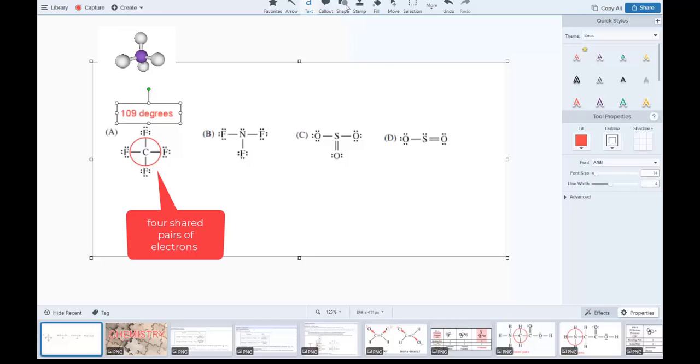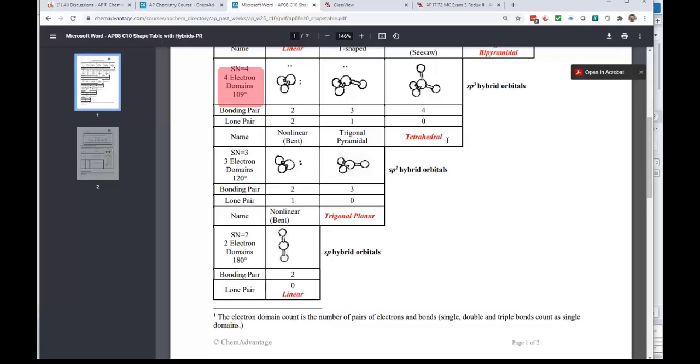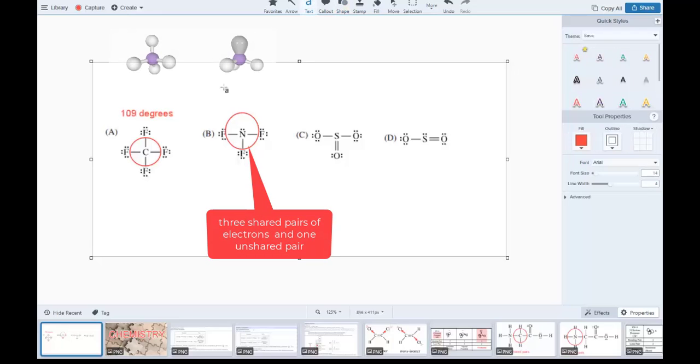Let's go back to option B. We draw our circle and see one, two, three sigma bonds and this cloud of electrons with two electrons which are repulsive. We're still dealing with four pairs of electrons - four domains. This is trigonal pyramidal with three bonding pairs, three things attached, and one cloud of electrons. Ideally it's 109 degrees. This is unsymmetrical and would produce a polar molecule with greater intermolecular attractions.